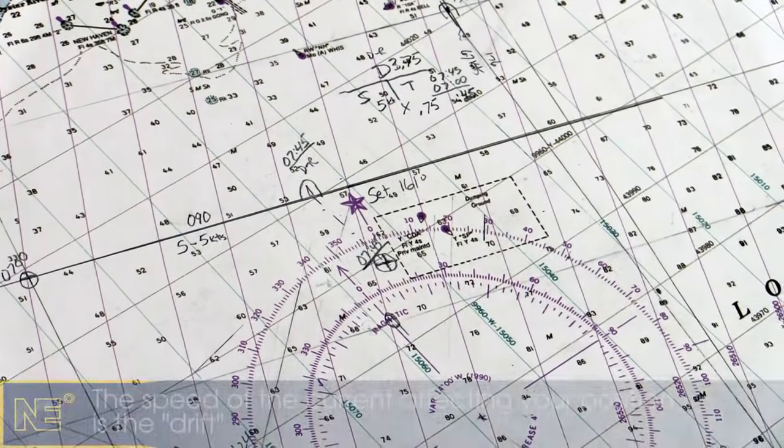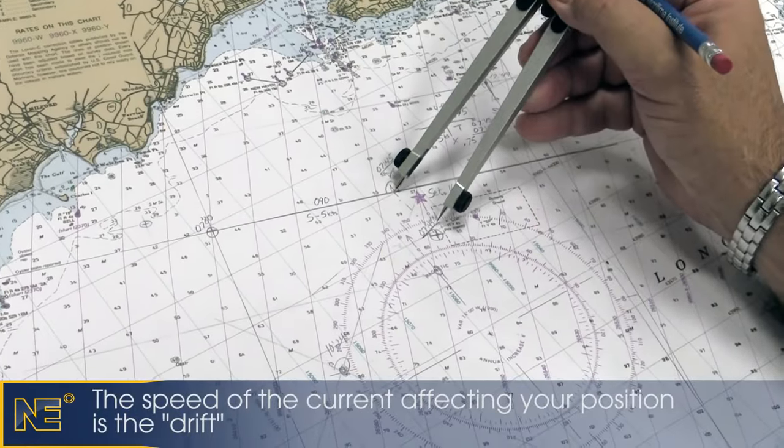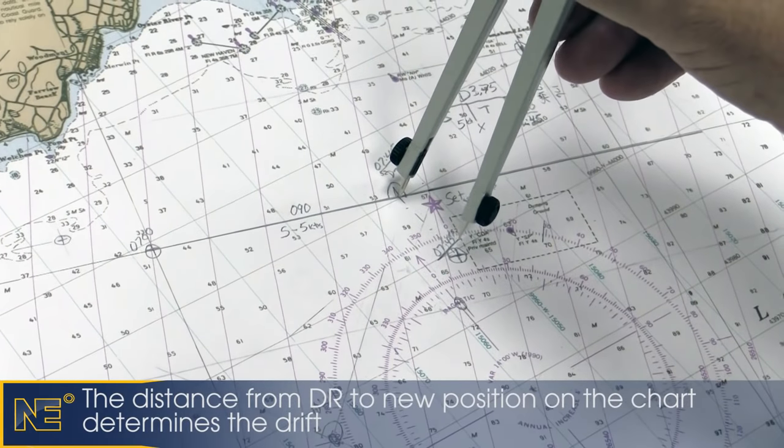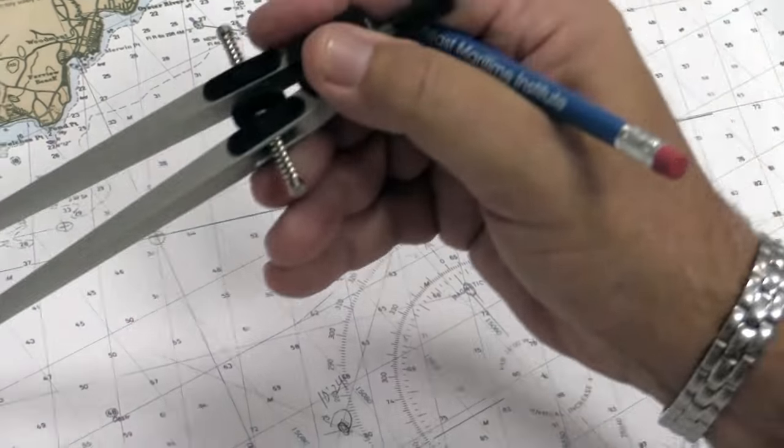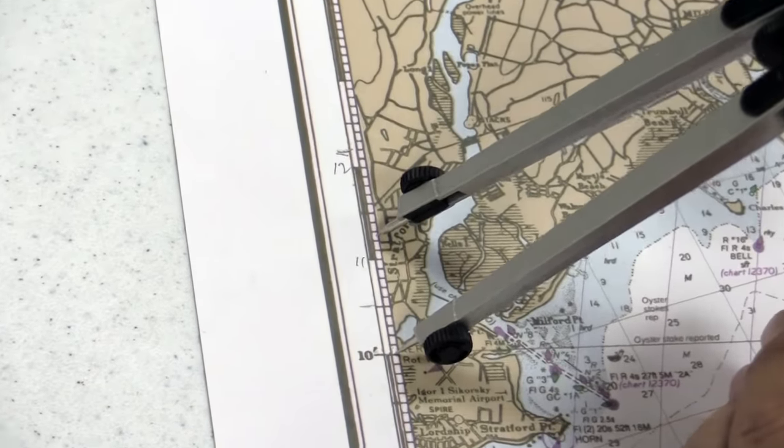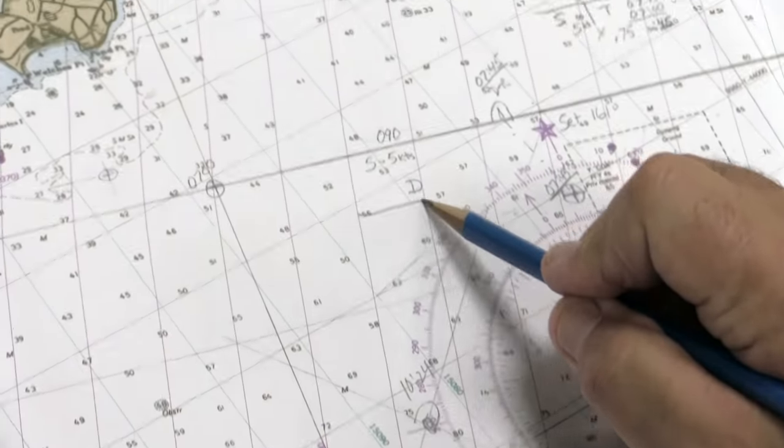Now we need to determine the speed of the current. That's drift. Speed of the current is the distance from our DR to our new position. So we'll get a measurement on that, again on the side of the chart. Distance, speed, and time, once again.